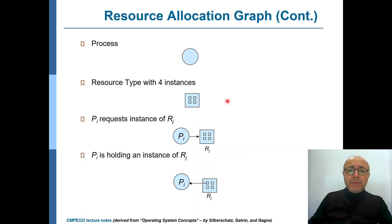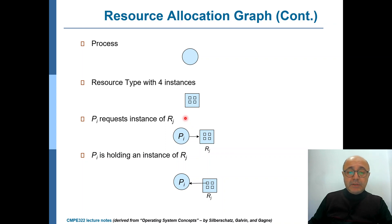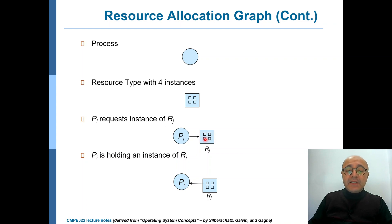In resource allocation graphs, processes are represented with circles, and resource types with squares where each instance is shown by a smaller dot inside the square. A request from process Pi to resource type Rj is shown as an arrow from the circle to the square — pointing to the resource type, not a specific instance, since any instance is satisfactory. In the case of an assignment, the arrow goes from the specific assigned instance inside the square toward Pi.